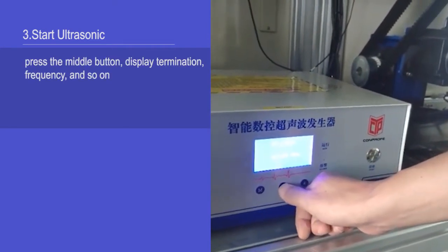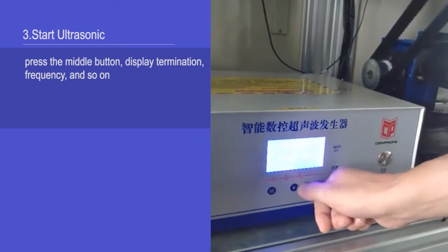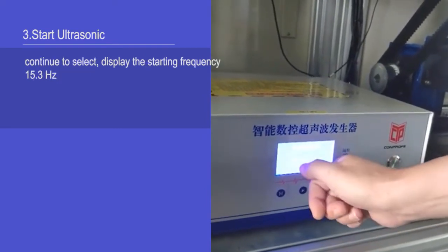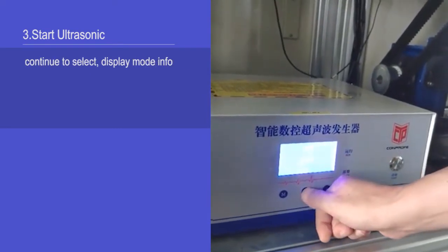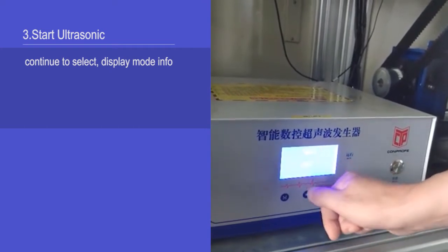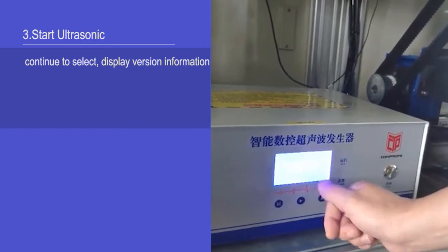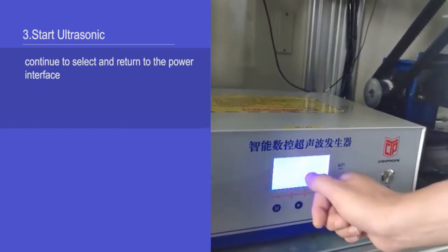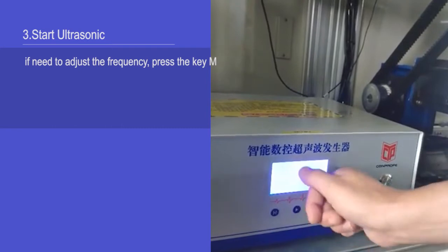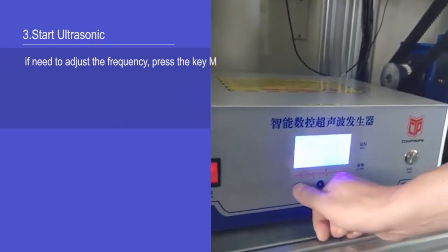Press the middle button to display termination, frequency, and so on. Continue to select display mode, display mode info, and display washing information. Continue to select and return to power interface. No need to adjust the frequency, press the KM.